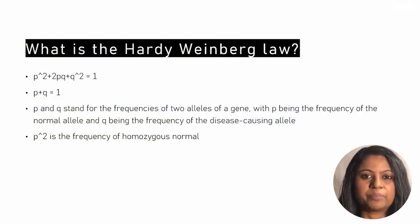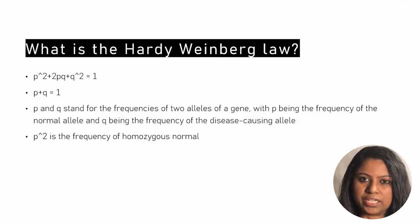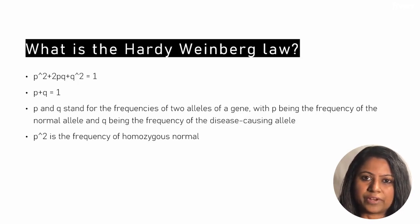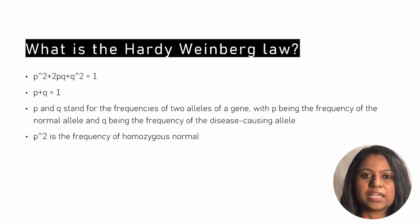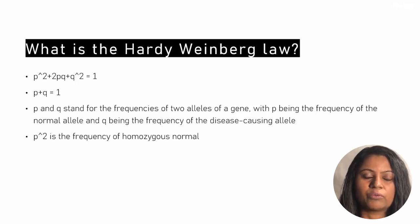In this equation, p and q are two alleles of a gene. p is the normal or disease-free allele, whereas q is the abnormal or disease-causing allele. p² represents the homozygous normal state, giving the disease-free population. Additionally, p + q = 1.